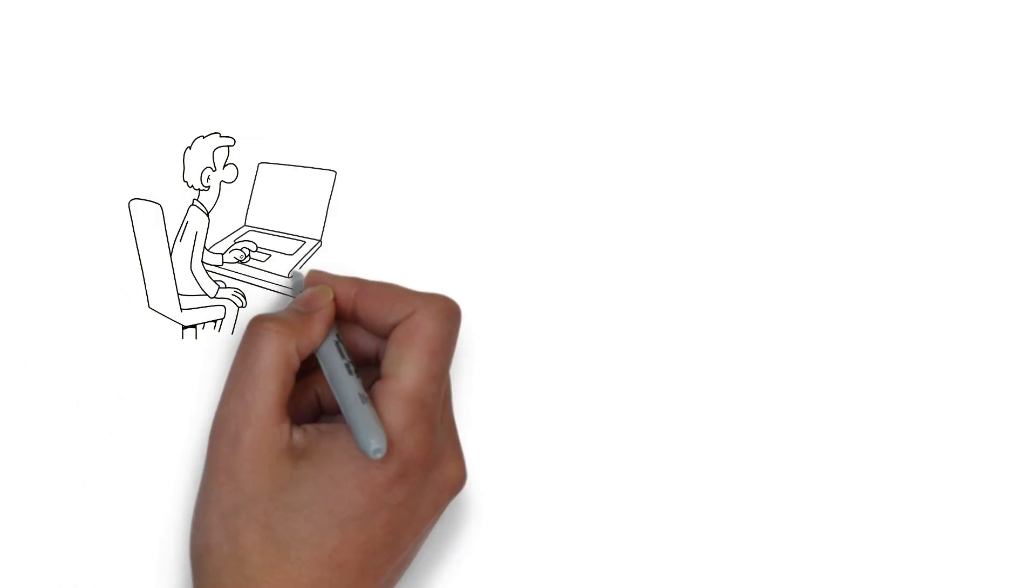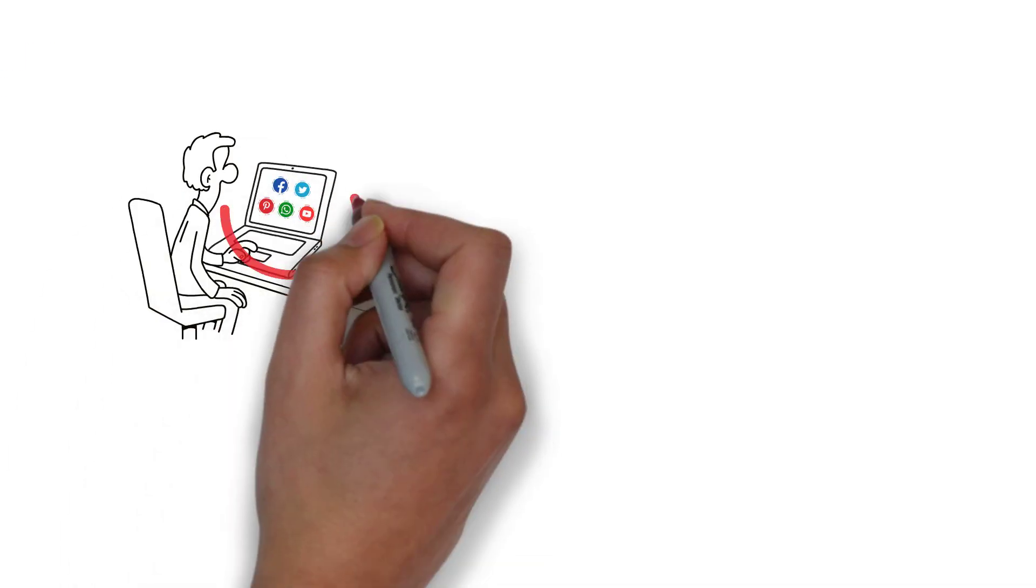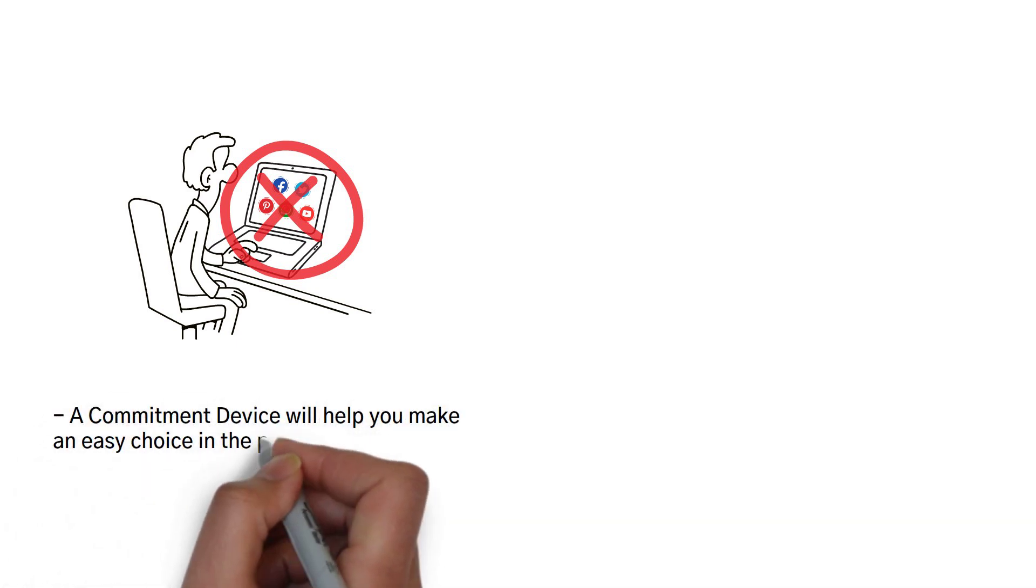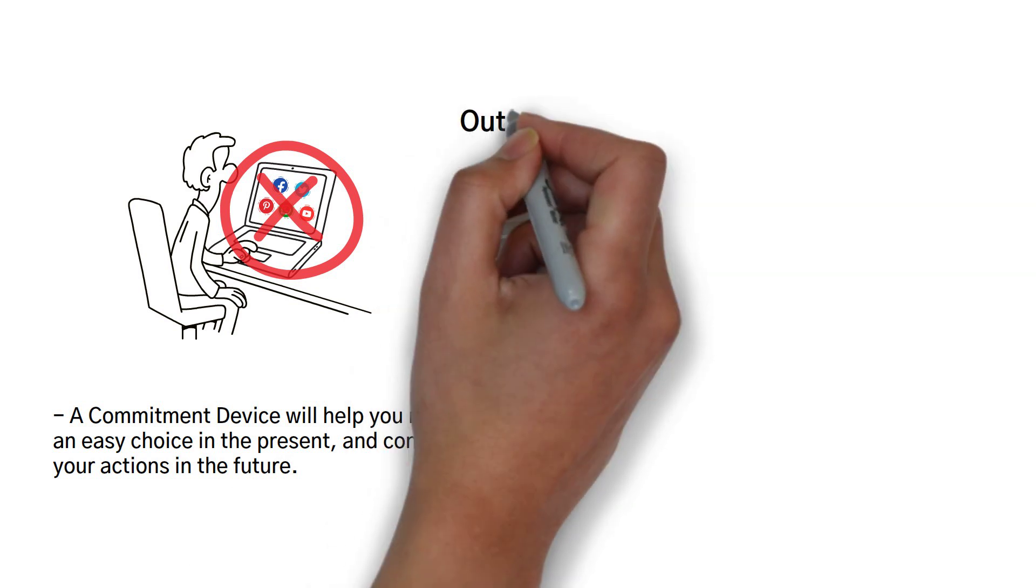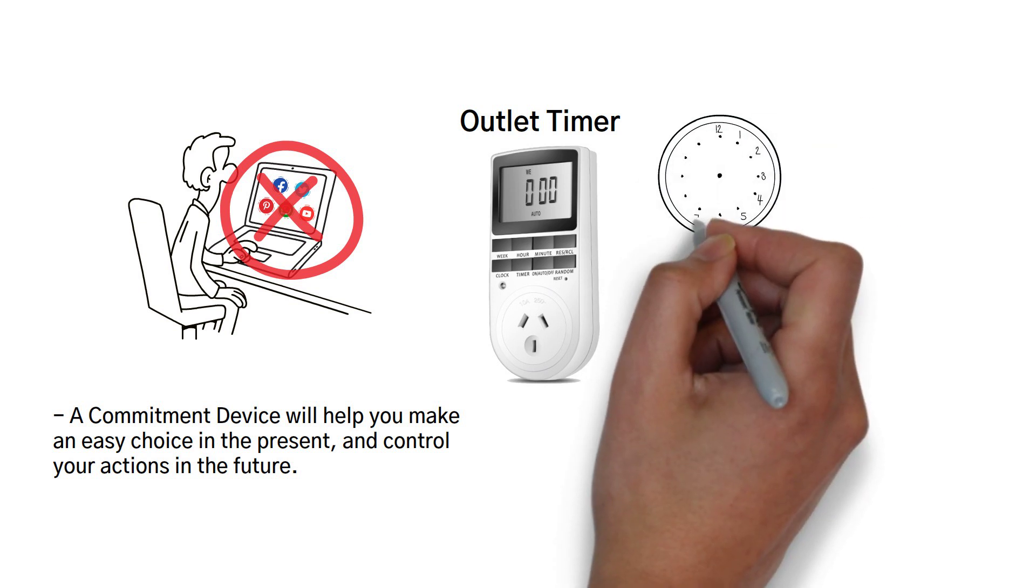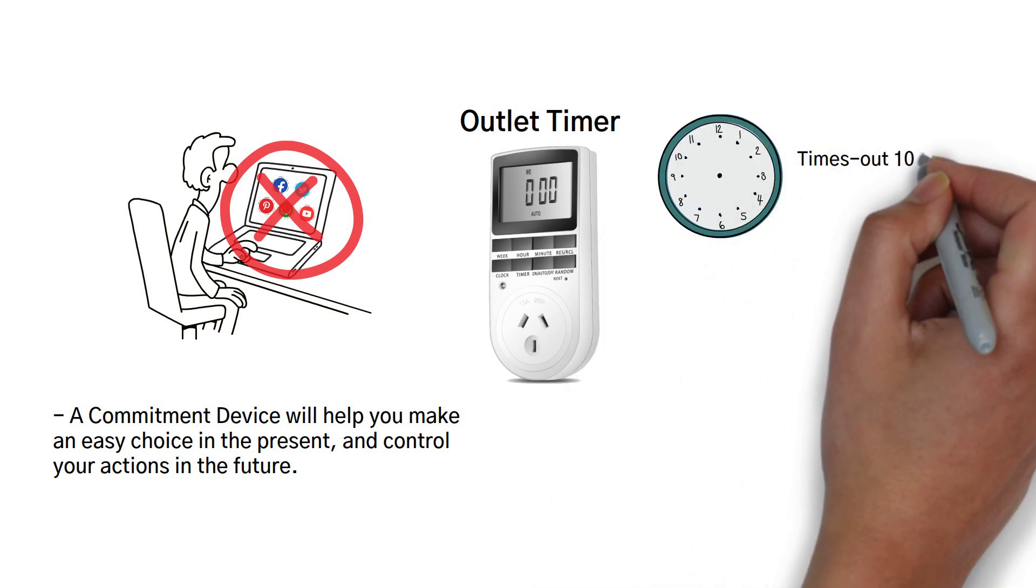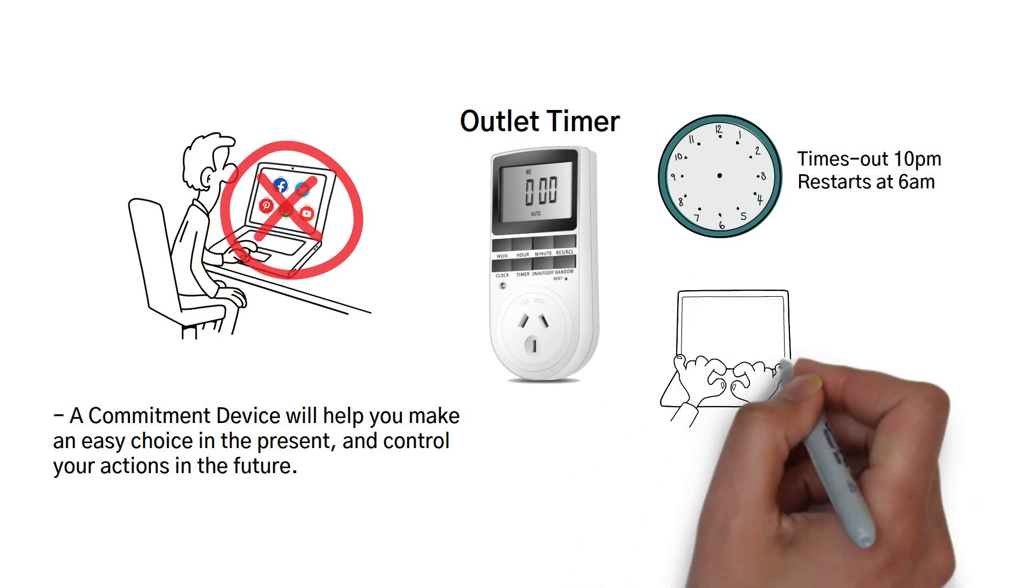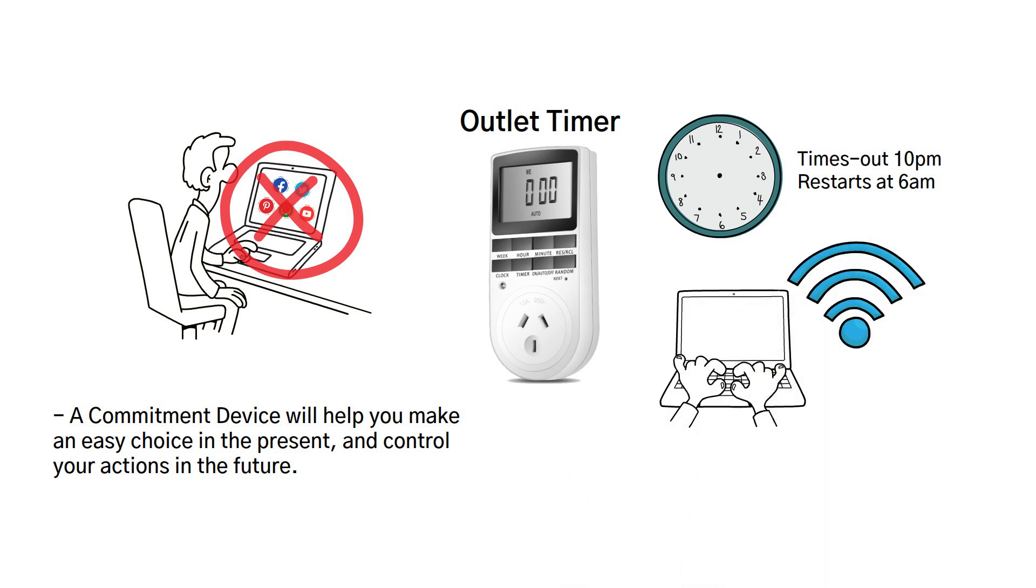For example, maybe you want to stop compulsive browsing on the internet. Here, a commitment device will help you make an easy choice in the present and control your actions in the future. Try something like an outlet timer for the power plug which can help to break your addiction of browsing the internet obsessively. This device literally times out and let's say at 10 p.m. and only starts at 6 a.m. So during the time in between, your Wi-Fi shuts down, making it really easy for you to break your late night internet browsing marathon sessions.